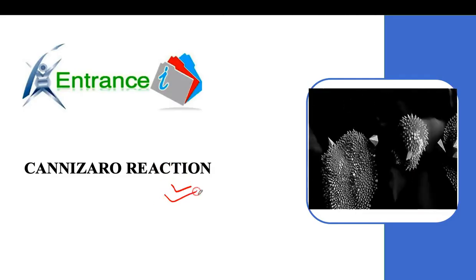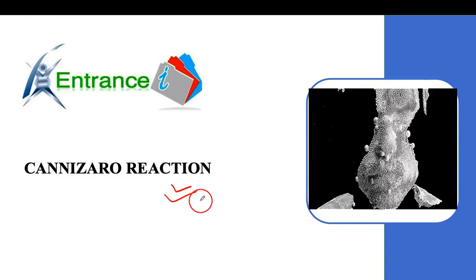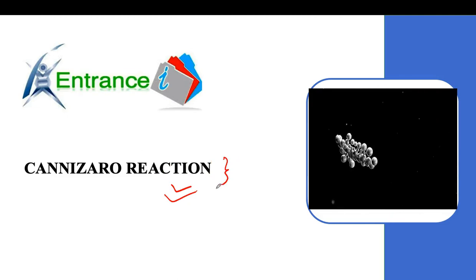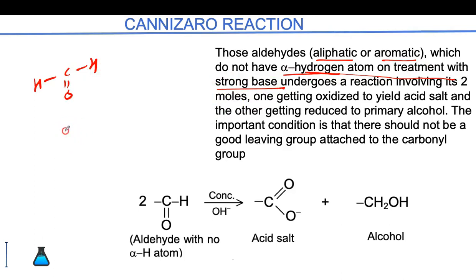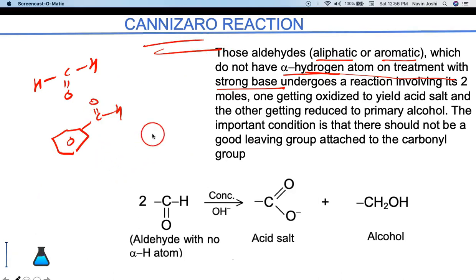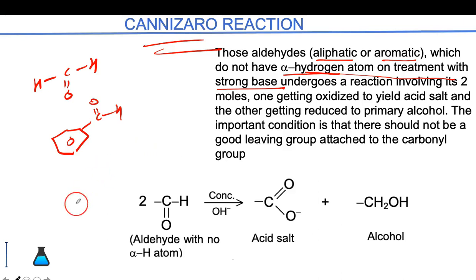Let's discuss the Cannizzaro reaction, which is very important in the context of aldehydes and ketones. It is the only reaction in aldehydes and ketones which undergoes disproportionation. Aldehydes — whether aliphatic or aromatic — which do not have alpha hydrogen, on treatment with a strong base, will undergo the Cannizzaro reaction. If there is any alpha hydrogen attached to the carbonyl compound, it will undergo aldol condensation, not the Cannizzaro reaction.